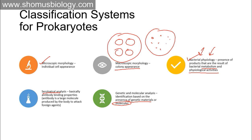Finally, genetic and molecular analysis means finding a particular molecular marker to identify the strain of the bacterium. Currently we use 16S rRNA sequencing — we sequence the 16S rRNA and that gives us important information regarding the signature DNA structures, which helps us understand which bacterial species we are dealing with.